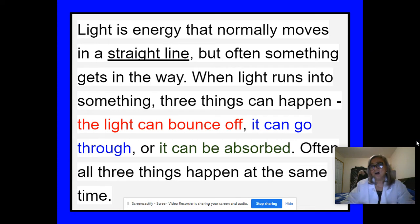Our unit on optics, about light. It's all about light. And it says here, it's an energy that normally moves in a straight line. But often, something gets in the way. When light runs into something, three things can happen. Remember this. The light can bounce off. It can go through. It can be absorbed. And often, all three things happen at the same time.